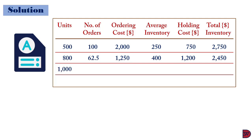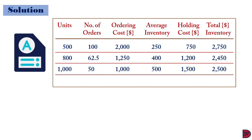We move on to 1,000 units per order, giving a total of 50 annual orders — that is 50,000 divided by 1,000. Ordering cost will be $20 times 50, giving $1,000. Average inventory is 1,000 divided by 2, giving 500. Holding cost is 500 times $3, giving $1,500. Total inventory is now $2,500 — that is the ordering cost of $1,000 plus the holding cost of $1,500.